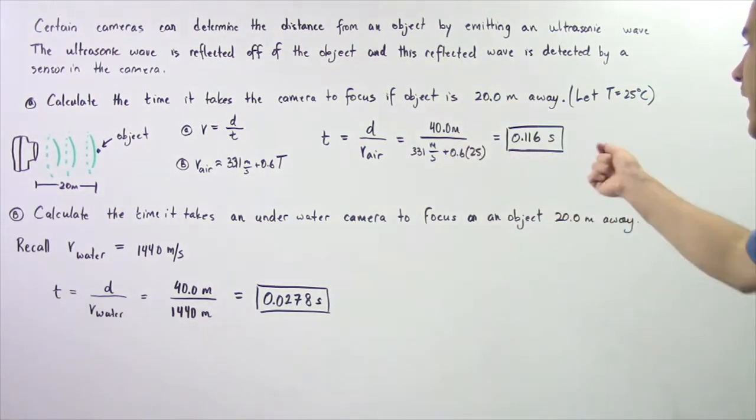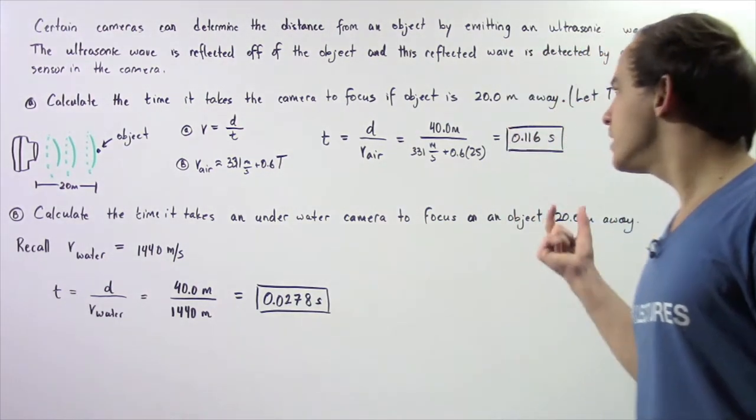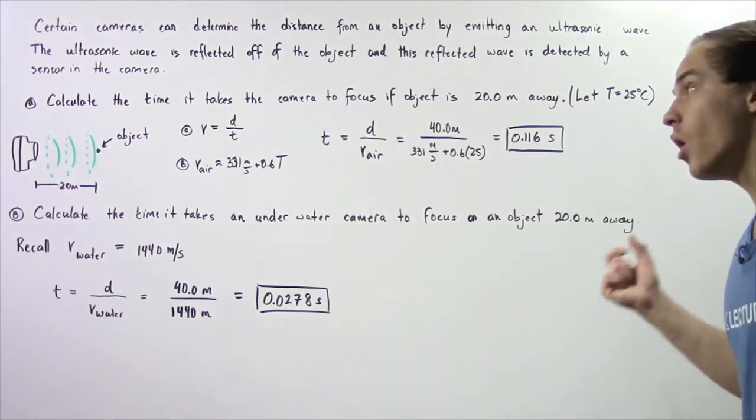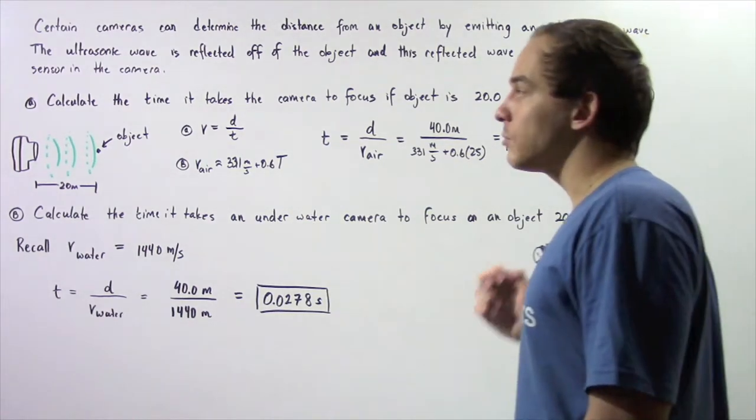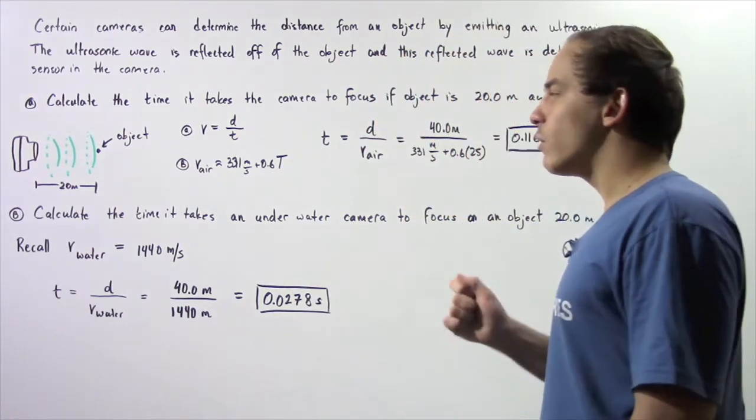We find a time of 0.116 seconds or 160 milliseconds. This is how long it takes our camera to autofocus on our object.